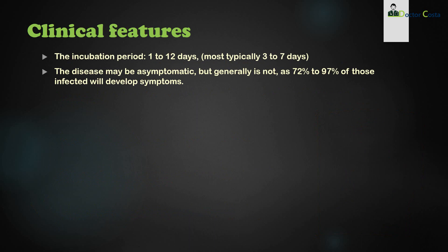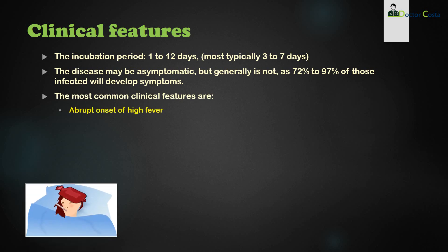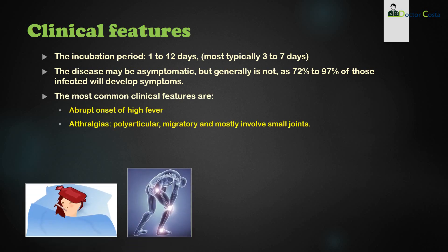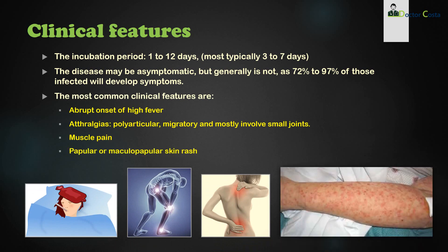The incubation period is one to twelve days, most typically three to seven days. The disease may be asymptomatic, but generally is not, as 72 to 97 percent of those infected will develop symptoms. The most common clinical features are abrupt onset of high fever, arthralgias which are polyarticular, migratory, and mostly involve small joints, muscle pain, and papular or maculopapular skin rash.